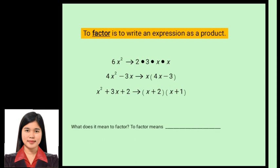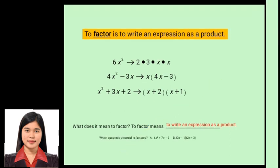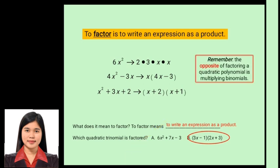So we have here a question: what does it mean to factor? To factor means to write an expression as a product. We also have here: which quadratic trinomial is factored? We have 6x² plus 7x minus 3, or (3x minus 1)(2x plus 3). The answer is (3x minus 1)(2x plus 3). Remember, the opposite of factoring a quadratic polynomial is multiplying binomials.